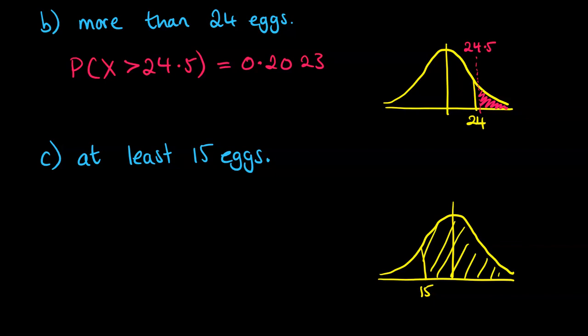If we want at least 15, that's 15 or more. So our 0.5, when we're thinking about do we go to the left or the right of 15, whatever we do, we need to end up that when we shade our more than, it's going to include the 15, which means that we need to drop it just below the 15 here. So that's 14.5.